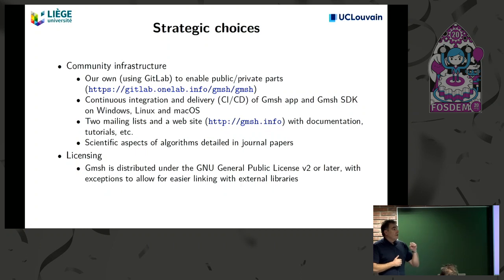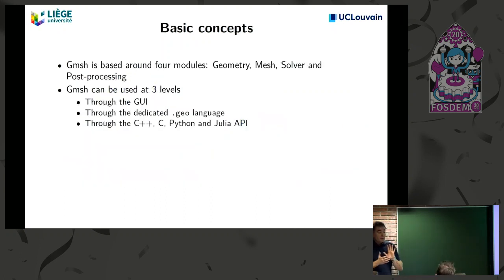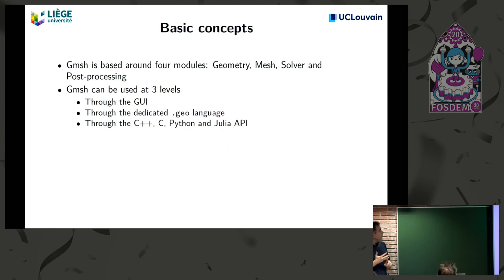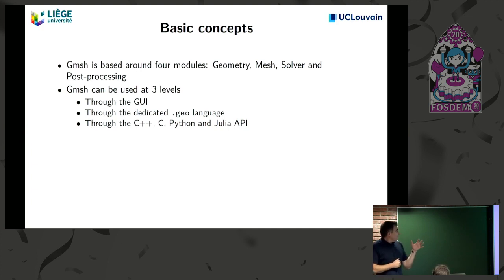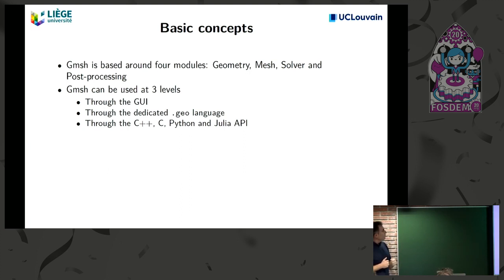We have exceptions so that people who want to combine Gmesh with non-GPL software can do so easily. There are four main modules: geometry, mesh, solver, and post-processing. You can use Gmesh at three levels: graphically through a GUI (useful for teaching), through a dedicated geo scripting language created before Python was prevalent, or through the API in C++, C, Python, or Julia.